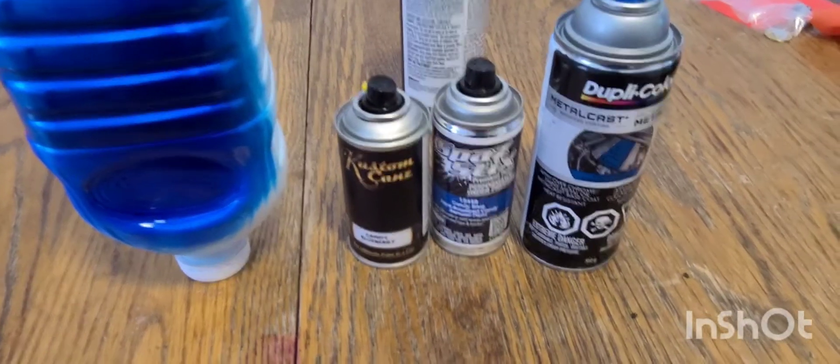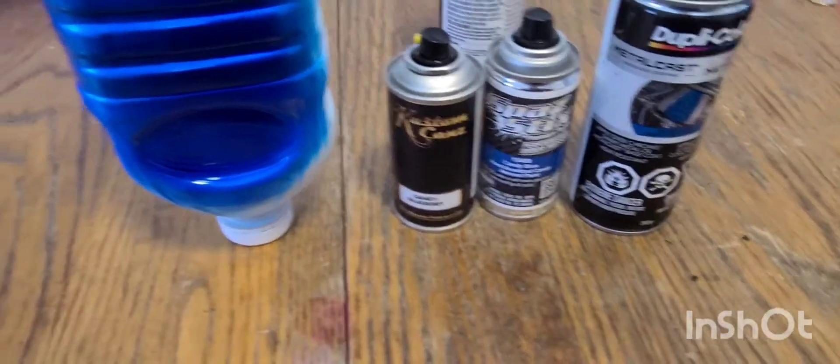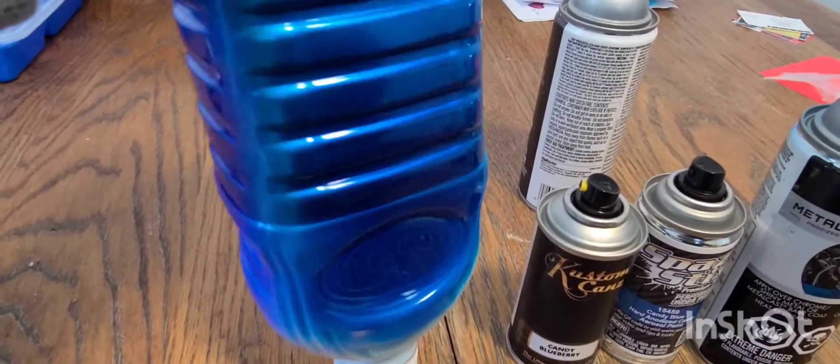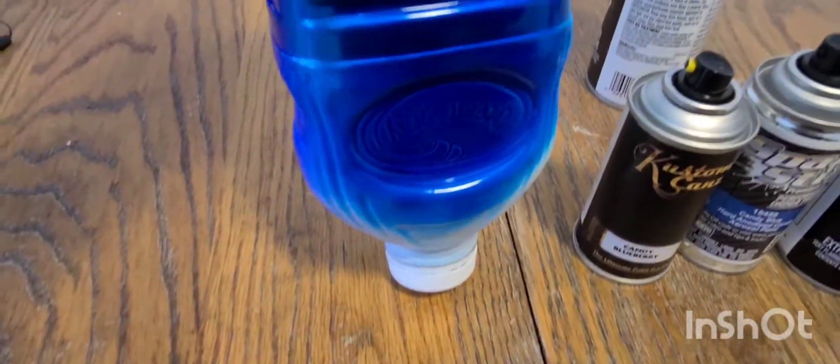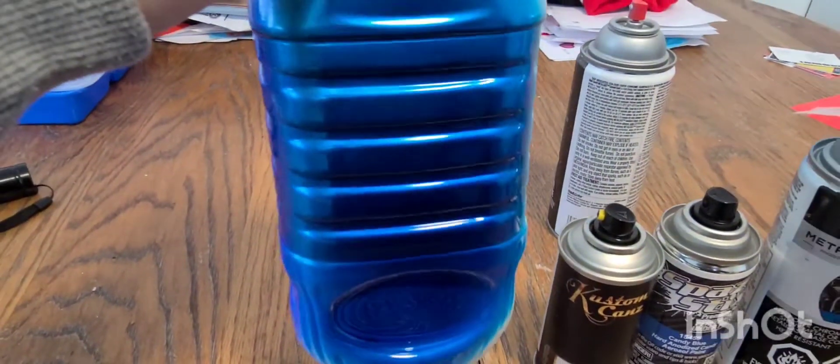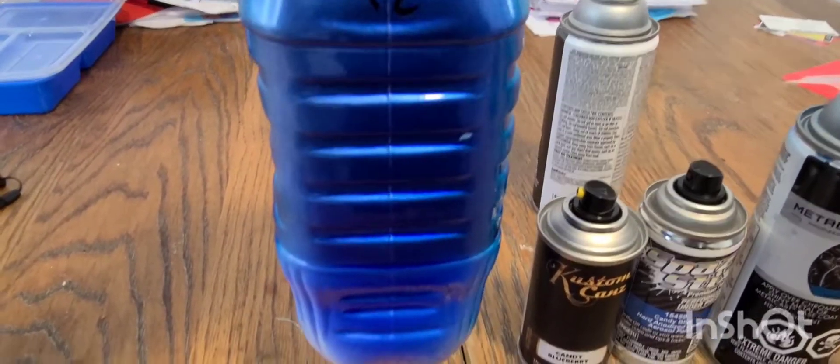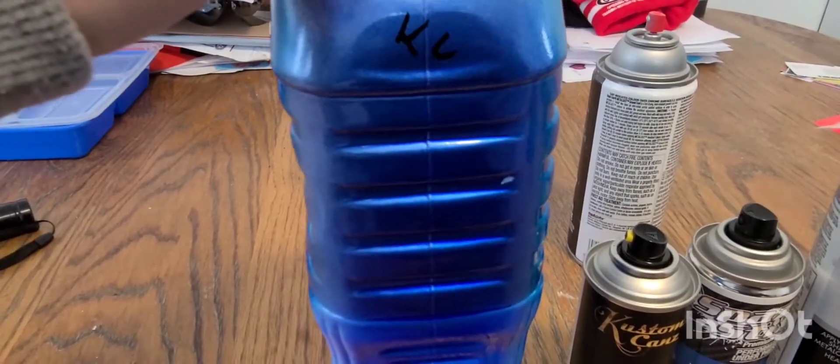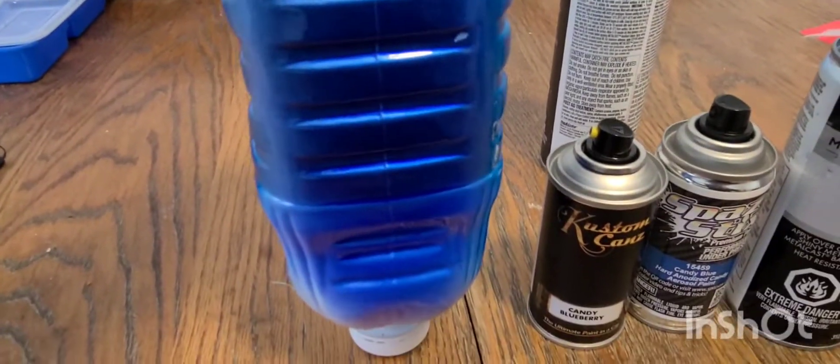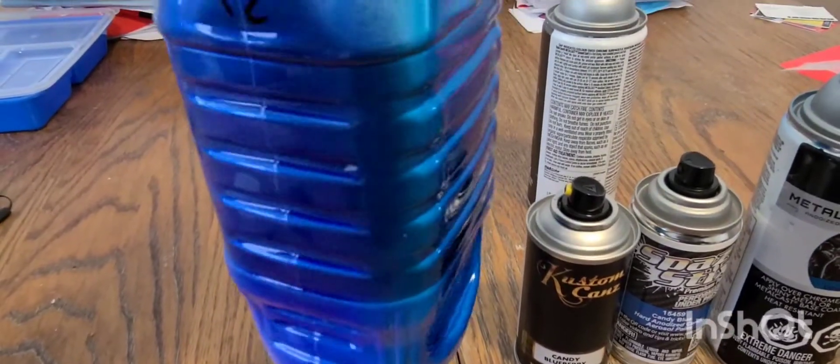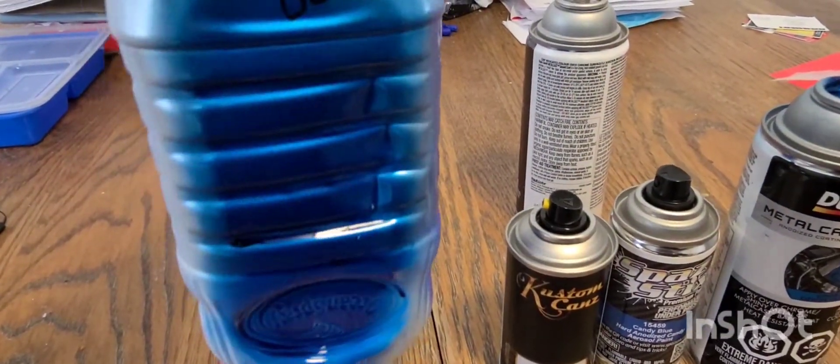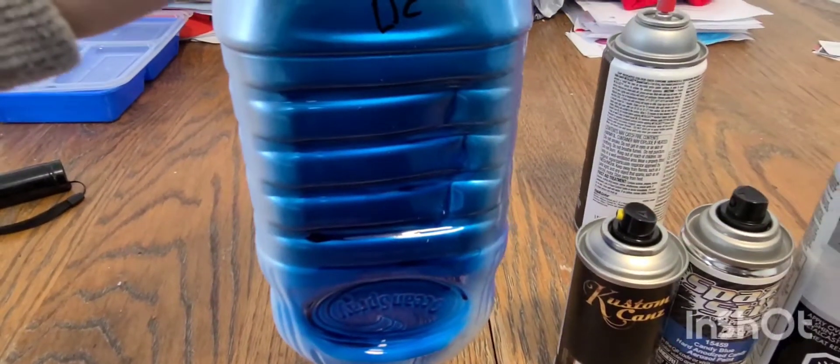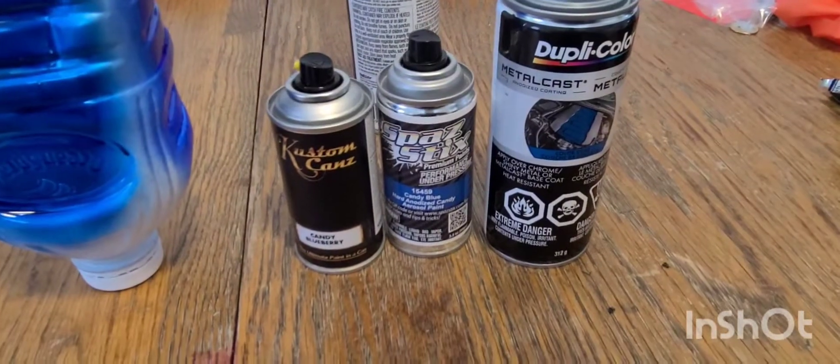Well, that concludes my video. Just in case you guys want to see it again, that's the Spaz Sticks now that it's dry, really nice. That is your Custom Cans, also a really nice color. Again, you just might need an extra coat to get the same result as the Spaz Sticks. And Dupli Color, not a fan of this at all. So that concludes my video guys, thanks for watching.